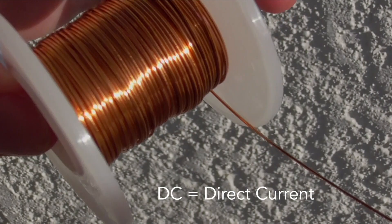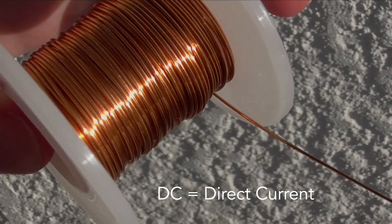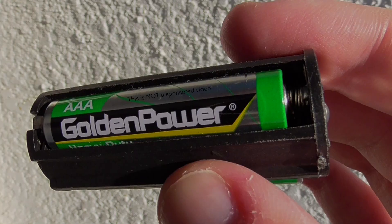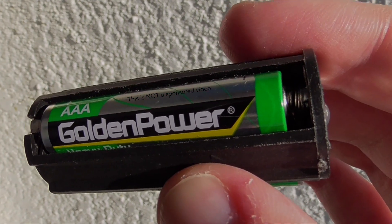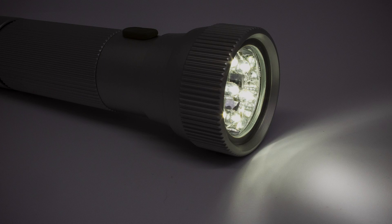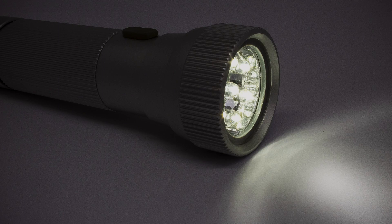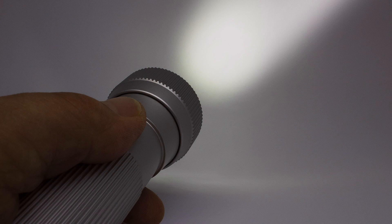Electricity is transferred through circuits in one of two forms, either DC or AC. DC stands for direct current. It always flows in the same direction through a wire. For instance, from the positive terminal of a battery to the negative terminal. Direct current tends to be used in applications where not much power is needed, including small handheld devices like torches.